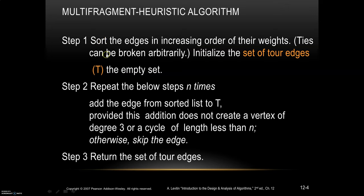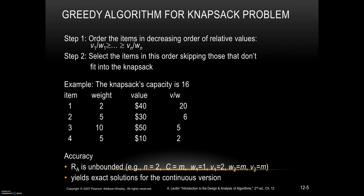Another algorithm for finding an approximate solution is the multi-fragment heuristic algorithm. First, sort the edges in increasing order of their weights. Initialize an empty set T of tour edges. Then, repeat n times: add the next edge from the sorted list to T, provided this addition does not create a vertex of degree 3 or a cycle of length less than n; otherwise, skip the edge. Once n edges are added, return the set T.